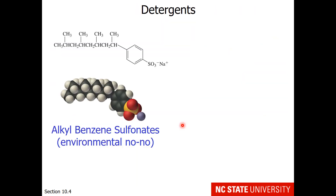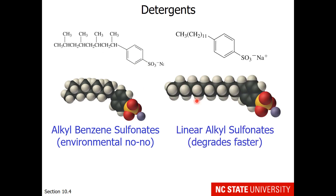Here are some different detergents besides sodium dodecyl sulfate. Initially, scientists came up with something called alkyl benzene sulfonates. Unfortunately, these are an environmental no-no because they don't decompose. So if they remain in the environment, they will make soap in places we don't want them, like a nice creek that we want to fish in. Scientists have realized that we're better off with linear alkyl sulfonates, which degrade faster in nature, and so they decompose and don't give us soapy natural water.